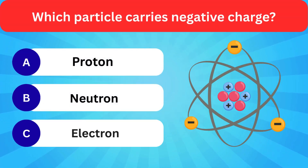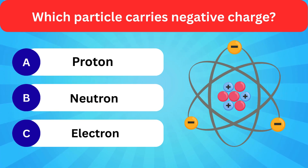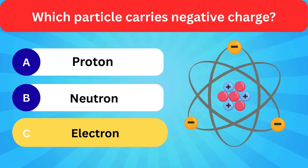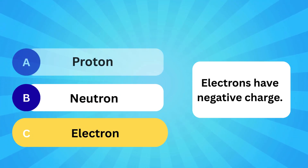Which particle carries negative charge? Options: Proton, Neutron, Electron. Correct answer is electron. Electrons have negative charge.